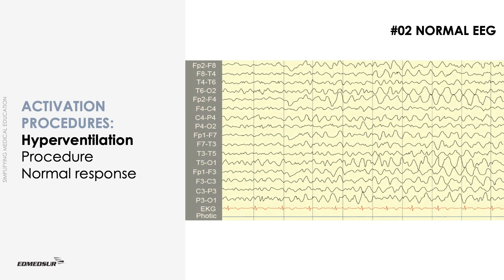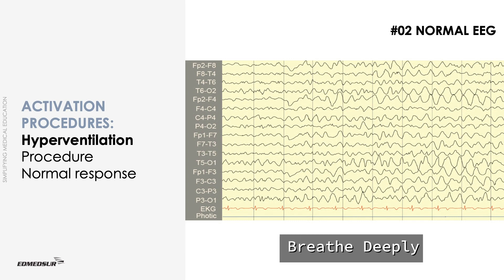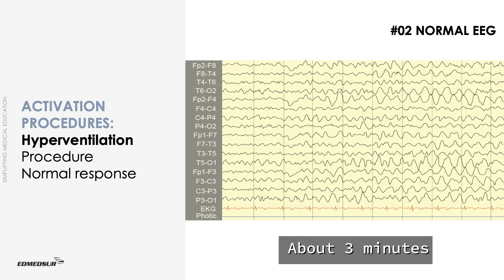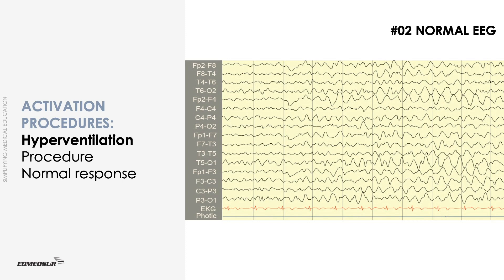In hyperventilation, patients are asked to breathe deeply in and out through their mouth, ensuring as much air is expelled during expiration as possible. This is done for about 3 minutes, with a respiratory rate of approximately 20-30 breaths per minute. The patient can stop hyperventilation if they are uncomfortable. A single lead ECG should be recorded during hyperventilation.